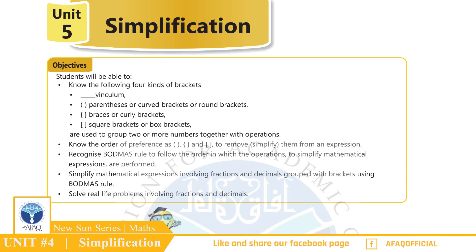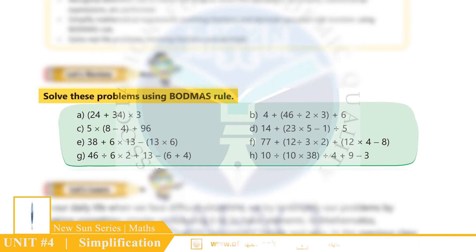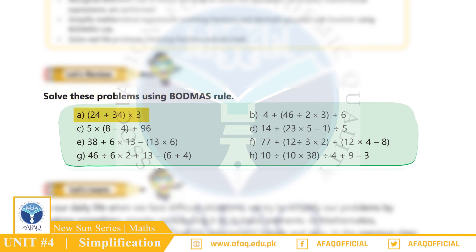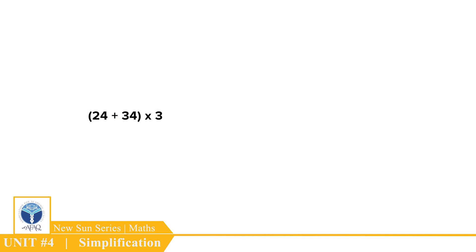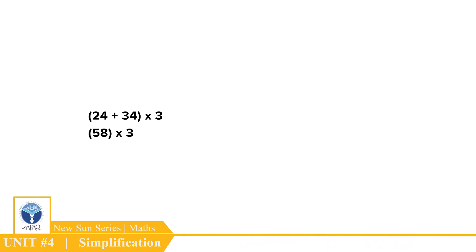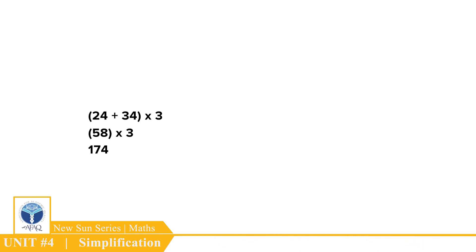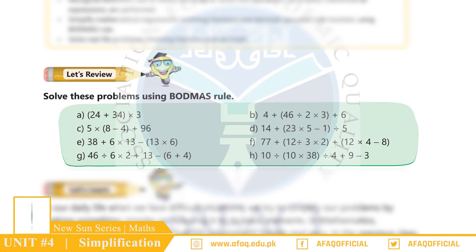Pehle kuch revision karte hain. Solve the problems using BODMAS rule. (A) Parentheses: (24 + 34) × 3. BODMAS rule ke tahat sabse pehle bracket ke andar operation karenge. So (24 + 34) × 3 = 58 × 3 = 174. Isi tarah agla sawal aap khud hal karein.